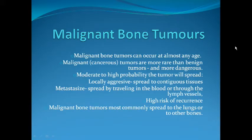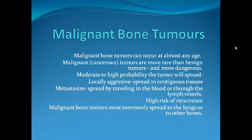Malignant bone tumours have a very high probability of spreading either locally or to distant tissues by way of metastasis. They are locally aggressive, spreading to contiguous anatomical structures and adjacent tissues, and they also spread to distant tissues by travelling through the bloodstream or through the lymphatic channels. They have a high rate of recurrence once surgically removed. Malignant bone tumours have a specific predilection to metastasize to lungs and other bones.